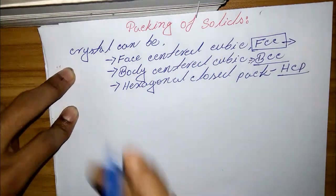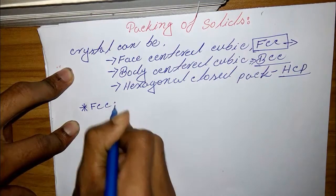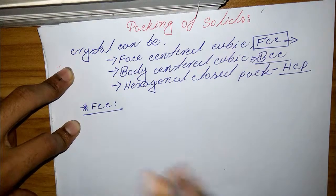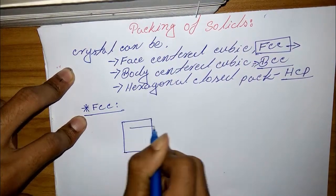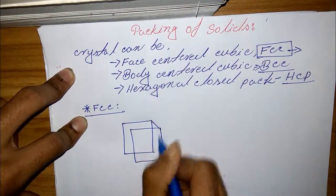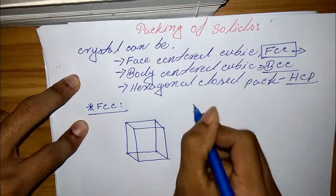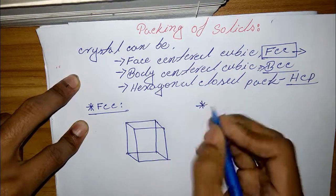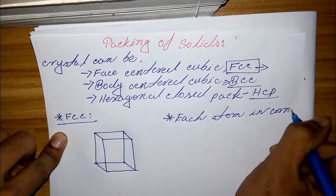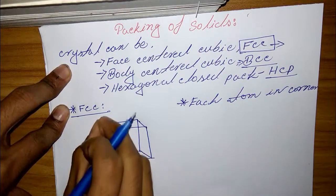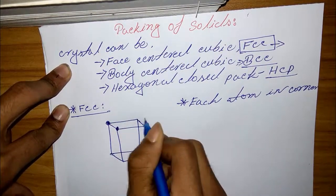Let's start by drawing the figure of FCC. In FCC, the main feature is atoms in the corner. There is an atom in each corner of the unit cell figure.